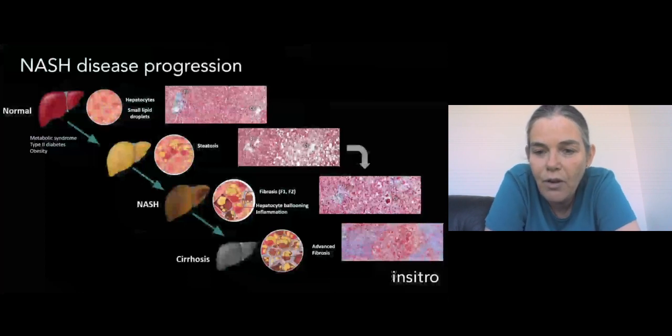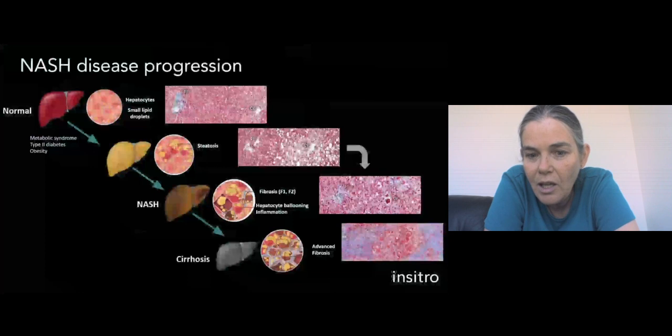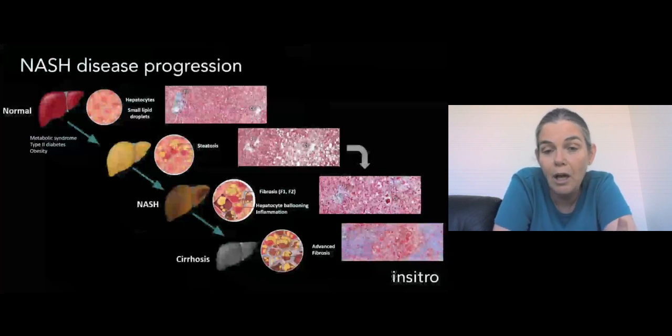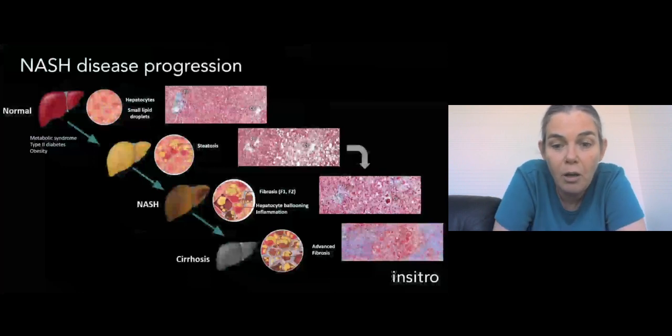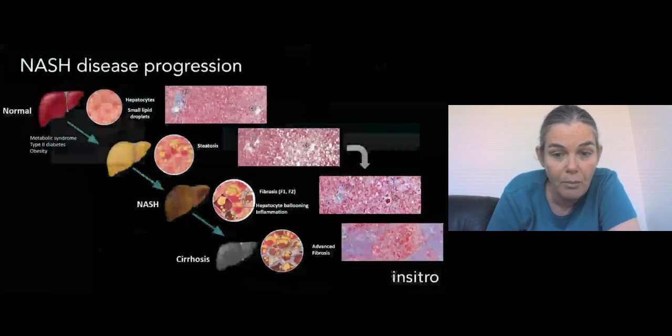And ultimately, when the fibrosis becomes very advanced, it's a state called cirrhosis, which often leads to things like liver cancer and is likely to lead to the need for a liver transplant. NASH is a relatively newly uncovered disease driven by the dietary changes that we're seeing, but it's poised to become one of the largest causes of liver transplant and liver cancer in the world over the coming decade.